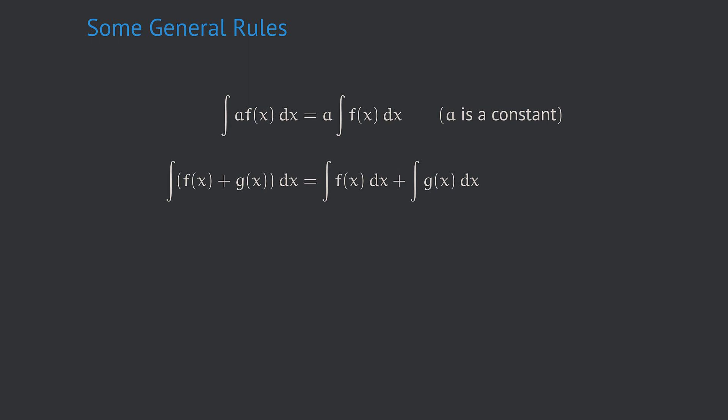Two of these rules we want to state here. The first allows us to pull a fixed constant a — which is a factor of the function we want to integrate — in front of the integral symbol. That means we can do the integration without this factor and afterwards multiply the result by a. The second rule gives a helpful simplification when integrating the sum of two functions: we can split up the integral and integrate the two summands separately, then sum up the two results.